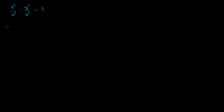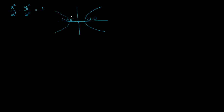We've done this in a previous problem, but that wasn't in the general case. So let's say we have a left-right opening hyperbola, with the equation x² / a² − y² / b² = 1. If I were to draw that hyperbola, it would look something like this — that's the x-axis, that's the y-axis, and it opens to the right and to the left. If you set y = 0, this point is (a, 0) and this point is (−a, 0).